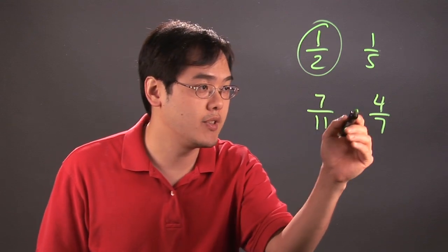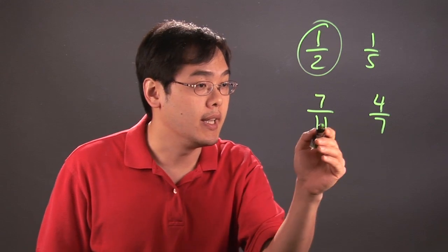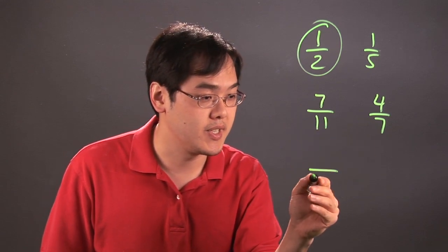Now, for example, using 7/11 and 4 over 7, a common denominator would be 11 times 7, which is going to be 77.